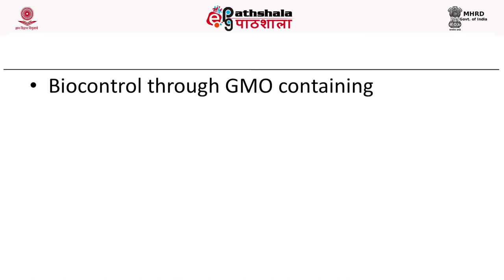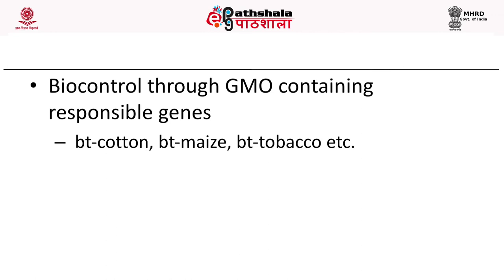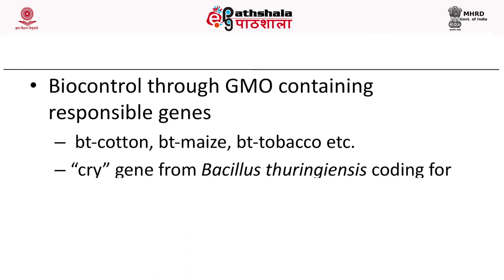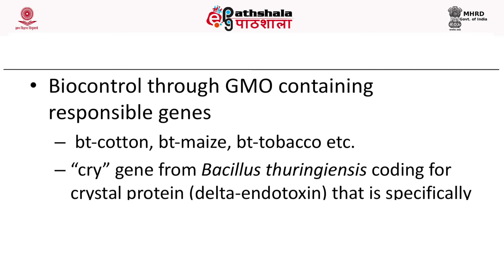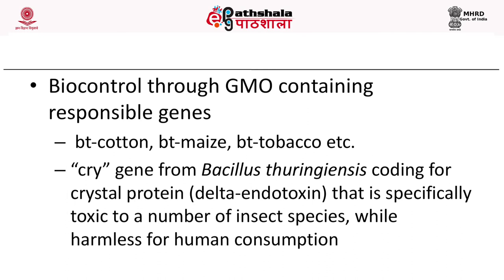Examples include the Bt gene cloned into various crops — Bt cotton, Bt maize, Bt tobacco, Bt brinjal, etc. The name comes from Bacillus thuringiensis, a bacterium that has a gene called the cry gene, which codes for crystal protein delta-endotoxin. This protein is specifically toxic to a number of insect species while not at all toxic to human consumption. Bt brinjal, for example, poses no harm to humans who consume it, but specifically targets insect species.